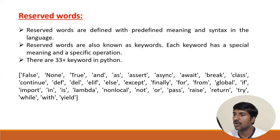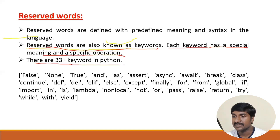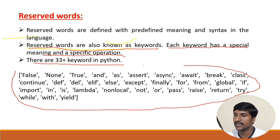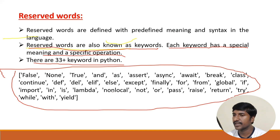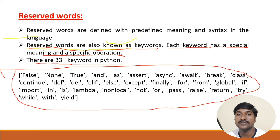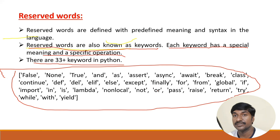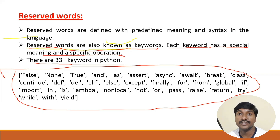In Python programming language there are 33 or more keywords. Reserved words are also known as keywords, and each keyword has a special meaning and specific operation already defined. Examples include False, None, True, and, as, assert, import, while — all of these are reserved words or keywords. Now let's see how we can view the list of Python keywords using Python programming language.